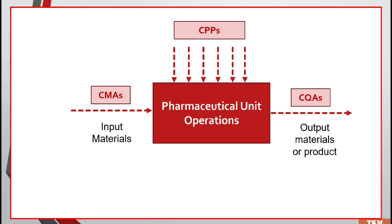This case study shows the correlation between process parameters, quality attributes, and material attributes using the example of the tableting process. During tableting, the different stages are granulation, drying, milling, mixing, compression, and coating. For granulation, the CMAs are particle size distribution, particle shape, elasticity, density, hardness, and moisture content. The process parameters are mixing time, binder fluid addition rate and time, method of binder addition, and temperature. The quality attributes are granule size and distribution and moisture content of the granules.